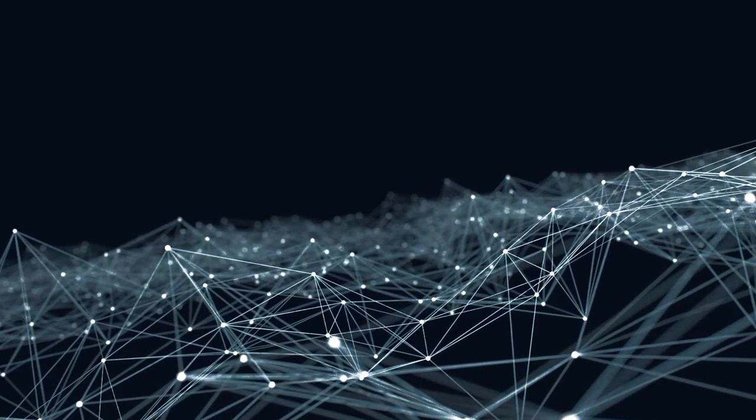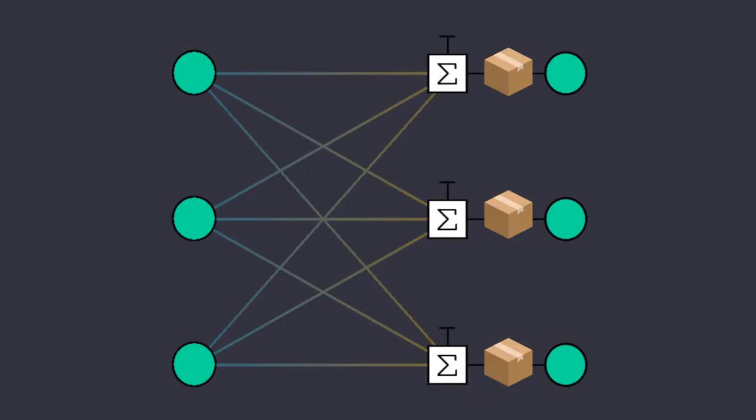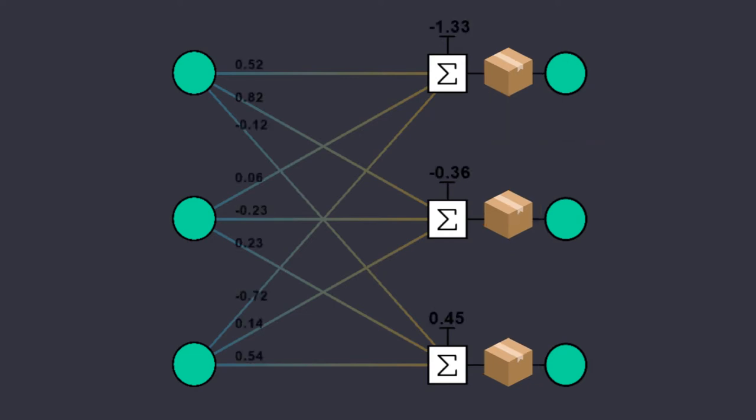Maybe it's better to recap a bit what happens in a neural network, considering this example formed by three inputs and three outputs. Remember that the circles are called nodes, the boxes are the activation functions, and the numbers near the lines are the weights and the biases.